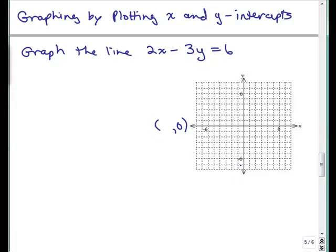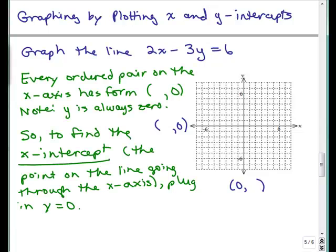On the y axis, you don't go left or right at all. So, x is always 0. Since every ordered pair on the x axis has the form something 0, note, y is always 0, this is how we're going to find the x intercept.